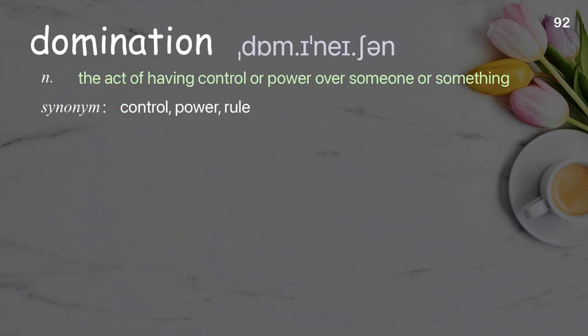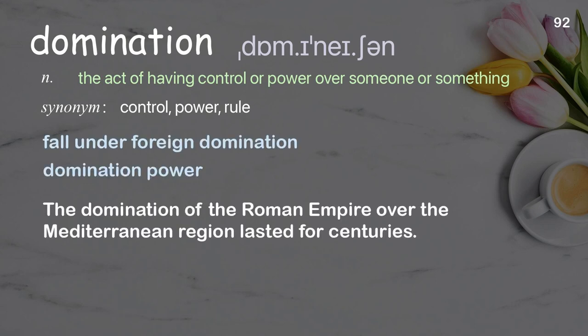Domination: the act of having control or power over someone or something. Examples: fall under foreign domination, domination power. The domination of the Roman Empire over the Mediterranean region lasted for centuries.